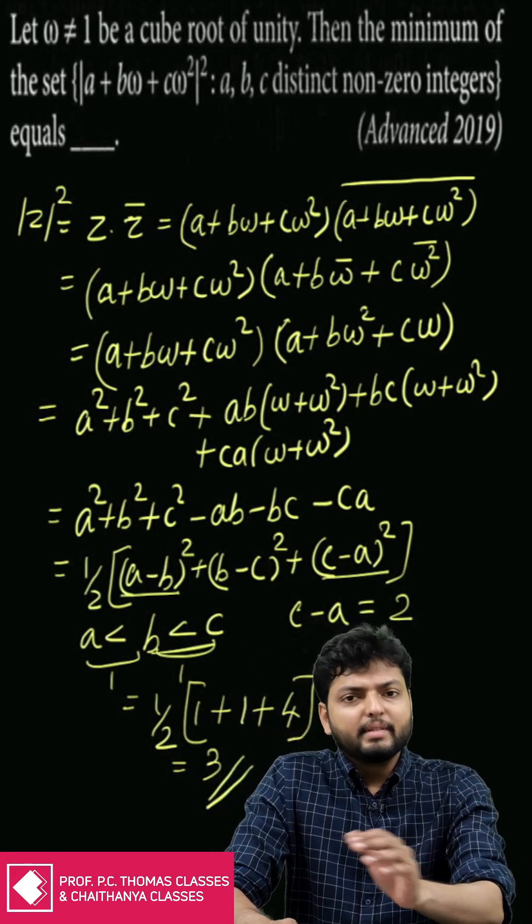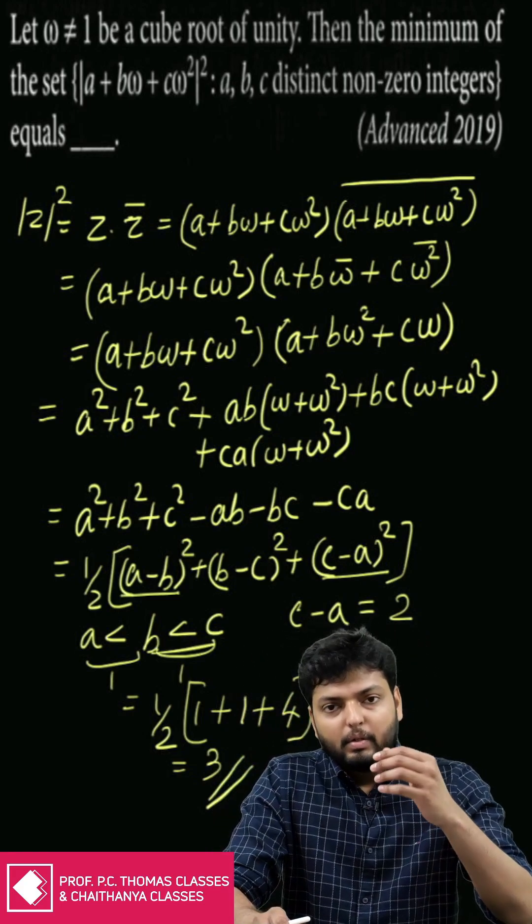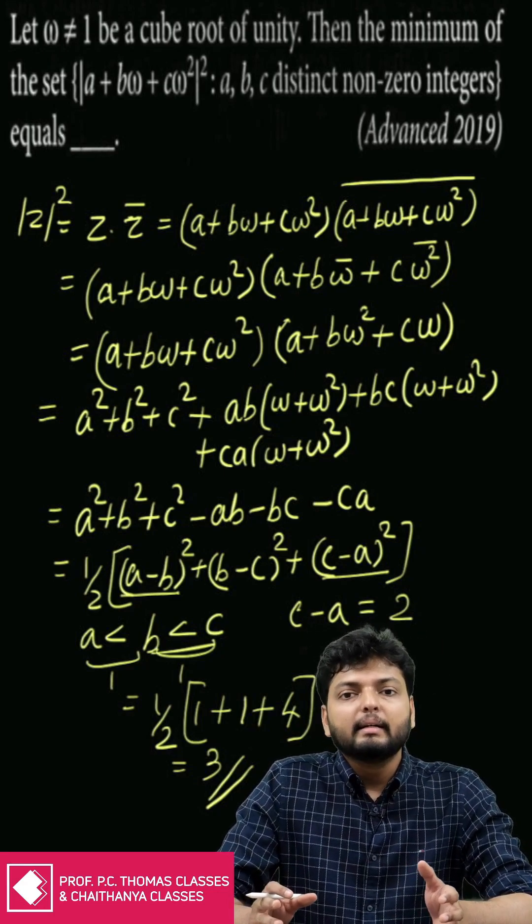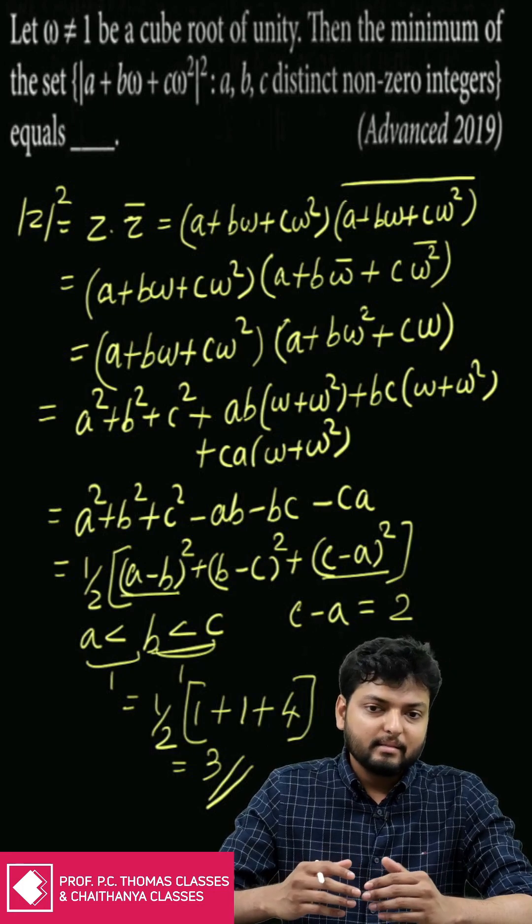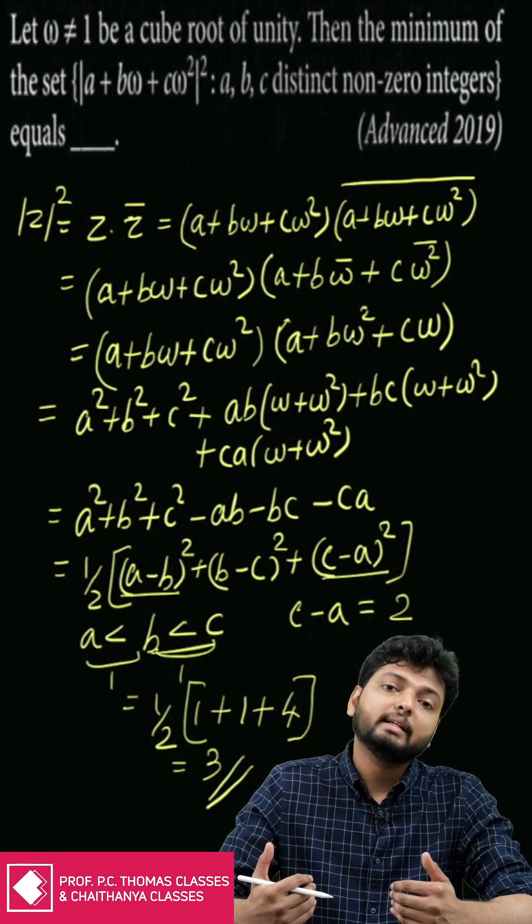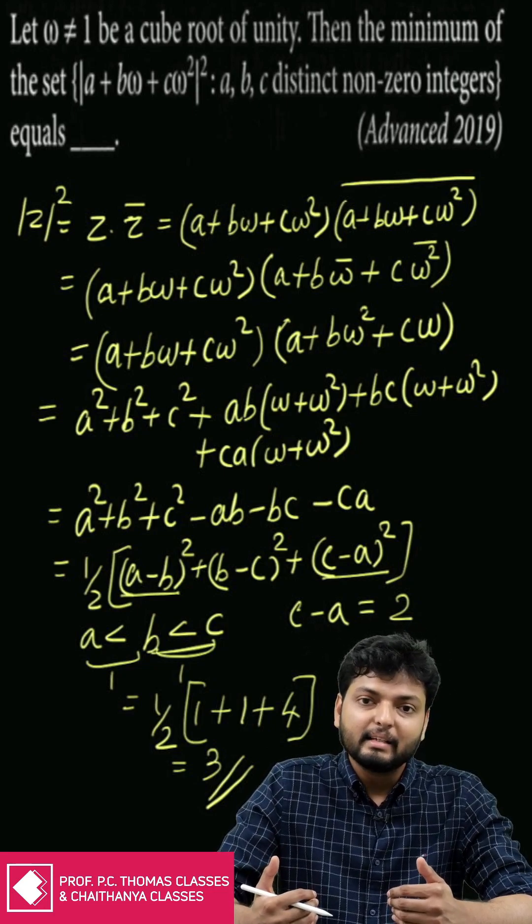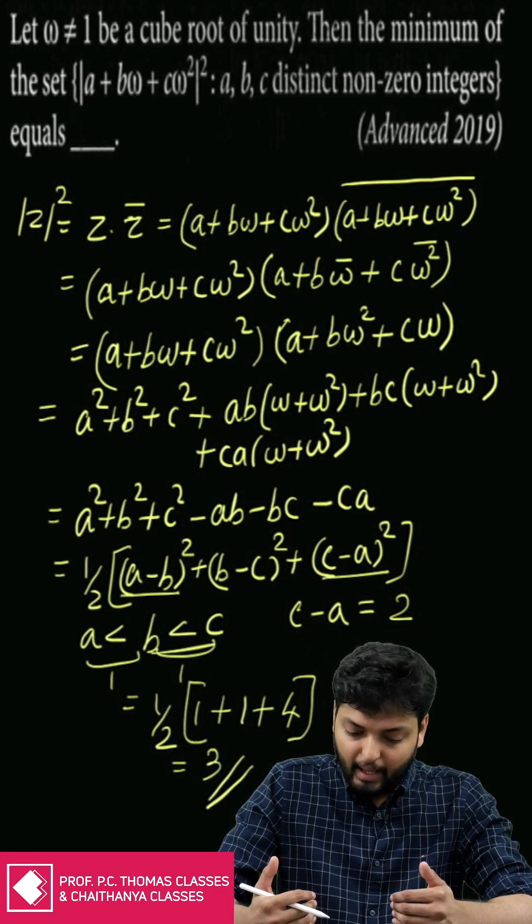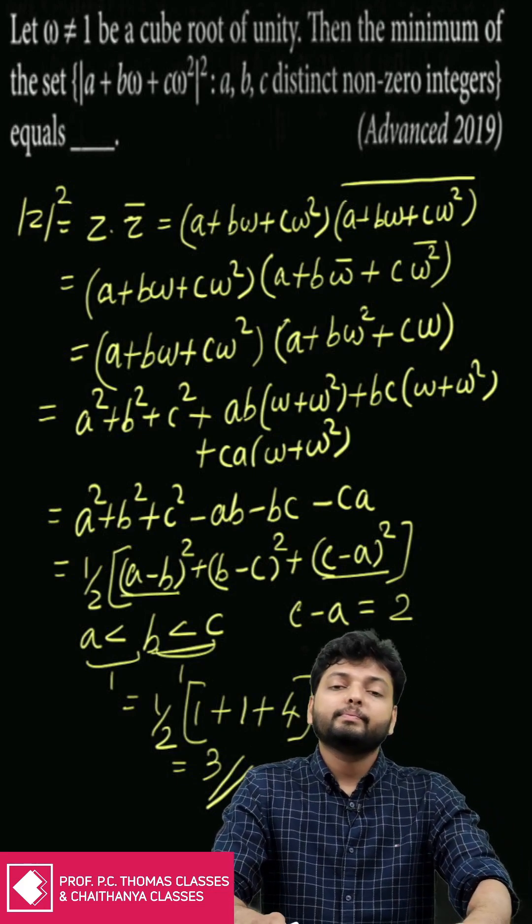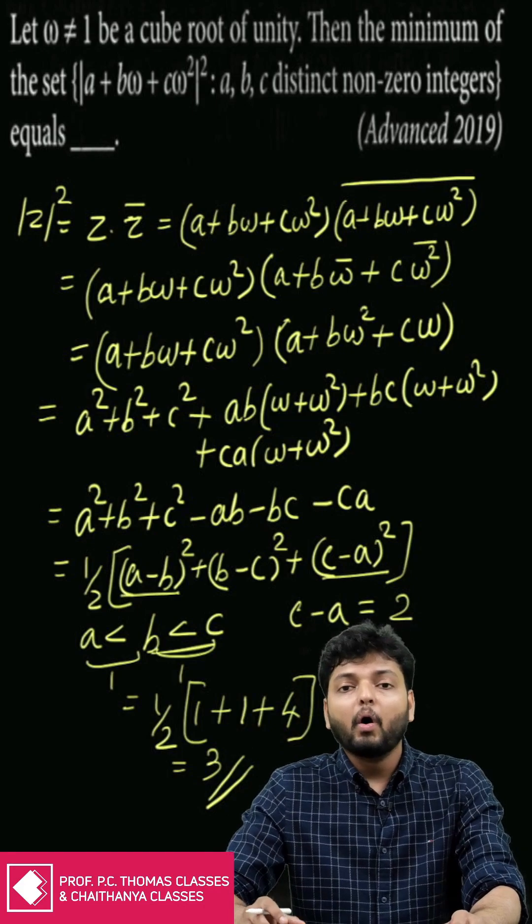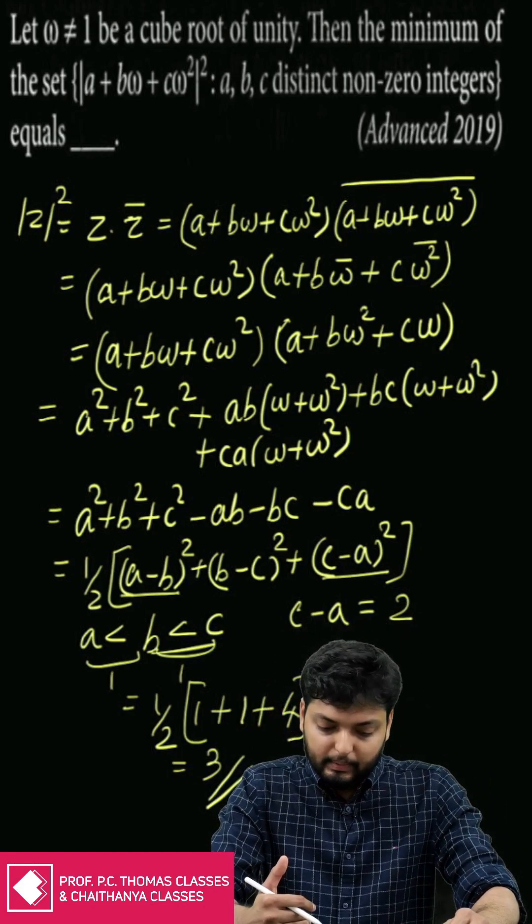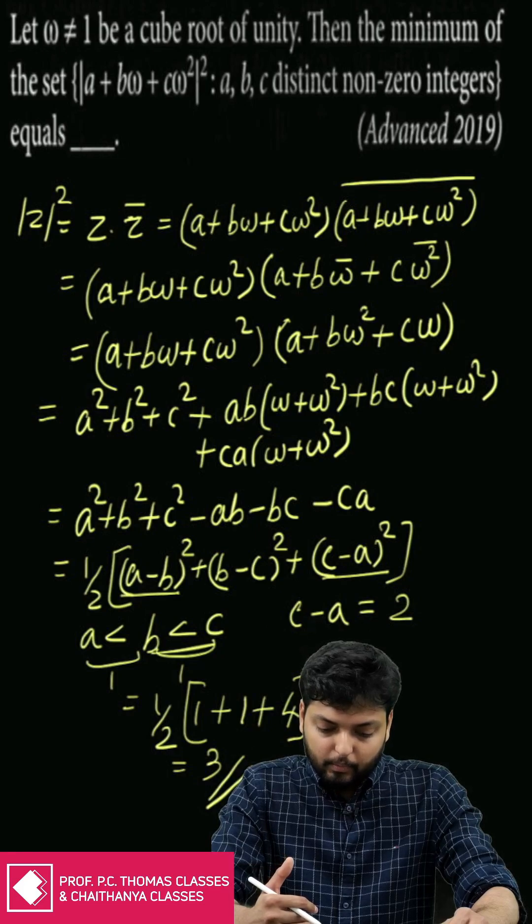As you can see, both questions are very similar but towards the end we applied a slightly different method. In the previous question it was not all equal so two of them could be equal. That is the difference here. Here we have to consider the fact that the integers are distinct and non-zero.